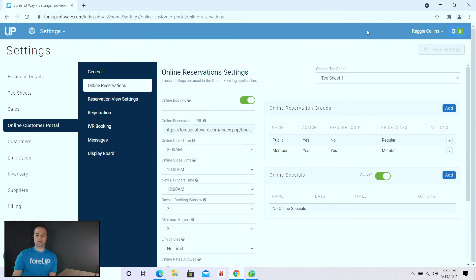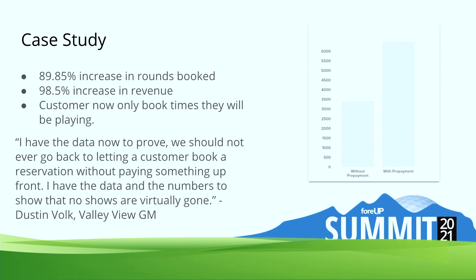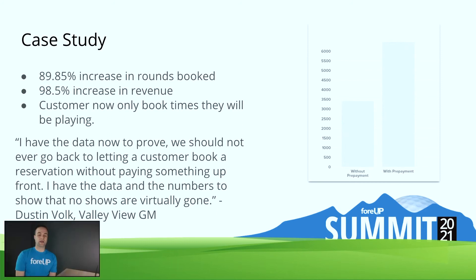We recently did a case study with one of our local courses here — Valley View Golf Course. They were able to turn on prepayment and what they saw was an 89% increase in rounds booked and a 98% increase in revenue in regards to rounds. This also helps make it so that customers are only going to book tee times they're actually going to play — no longer will someone book a tee time for four people and only have two or three show up. They'll actually book for the number of people coming to play golf.